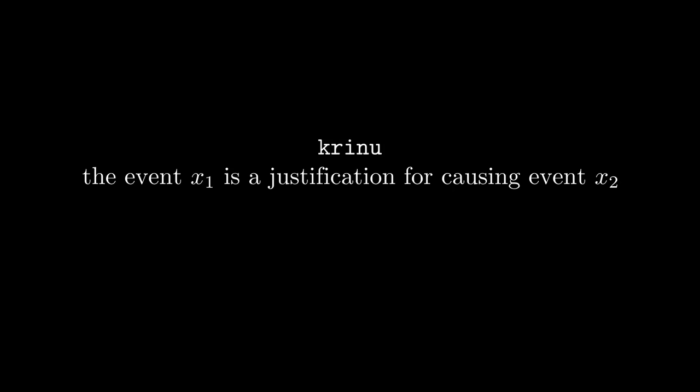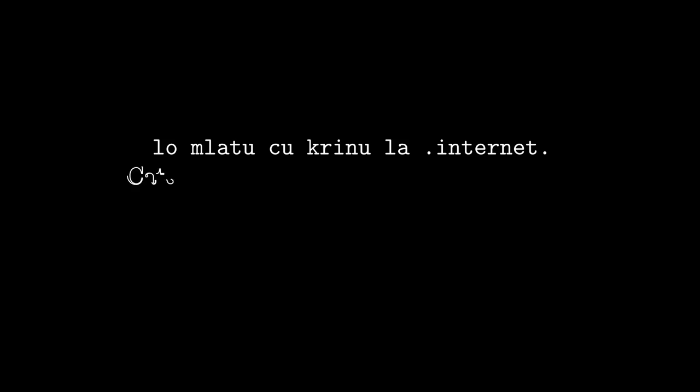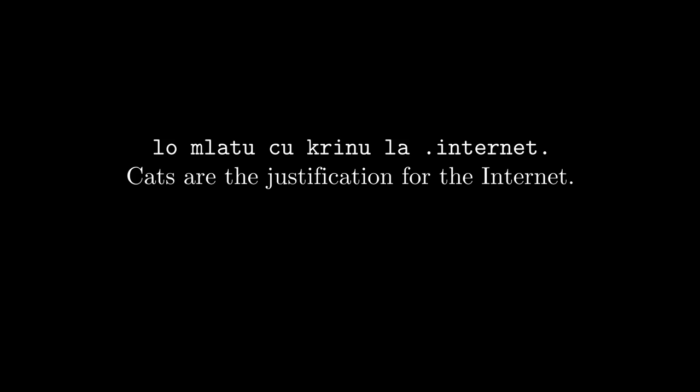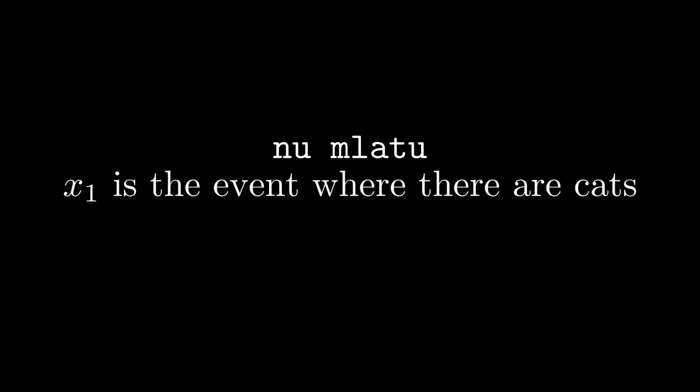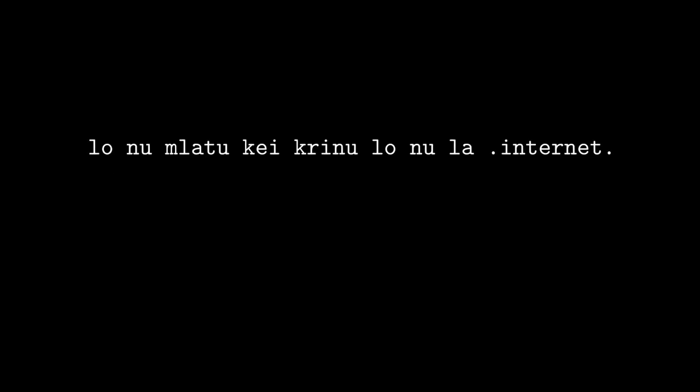Let's take a look at the gismu krinu: 'the event X1 is a justification for causing event X2.' So I might want to say lo mlatu ku krinu la internet — 'cats are the justification for the internet.' But that doesn't make sense because krinu requires events, and neither cats nor the internet are events. To construct an event we first need a bridi — we could use mlatu, 'there are cats.' Then we stick nu in front of it: nu mlatu, 'X1 is the event where there are cats.' Now we can put the whole thing together: lo nu mlatu ku krinu lo nu la internet. 'Cats are the justification for the internet.' And it's true.